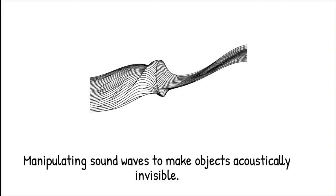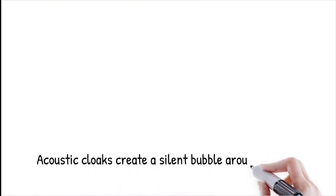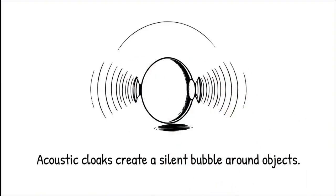Unlike conventional materials, which simply block or absorb sound, acoustic cloaks create a silent bubble around an object, preventing sound waves from interacting with it.